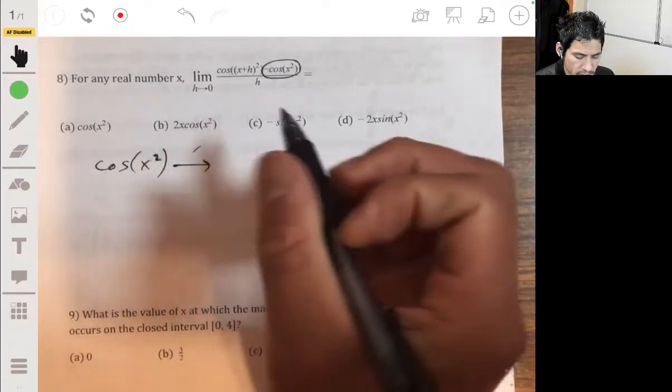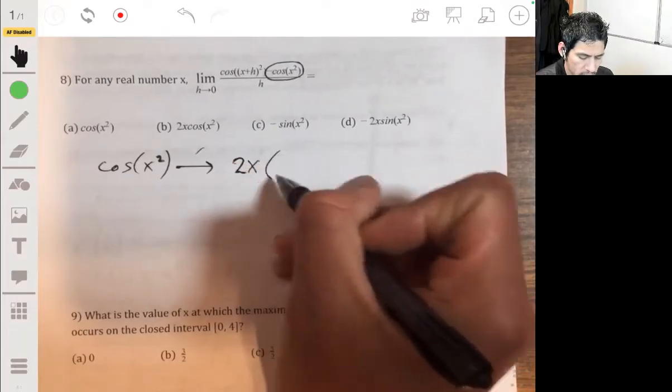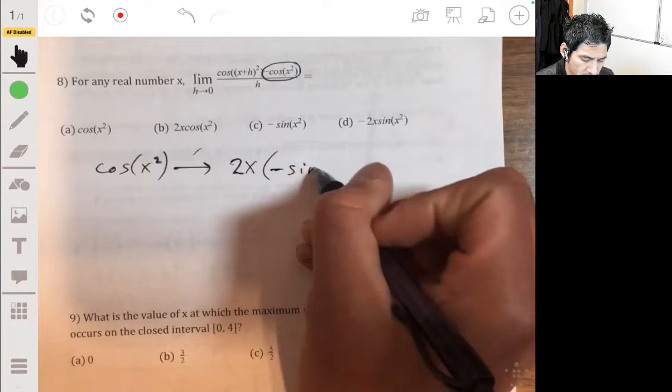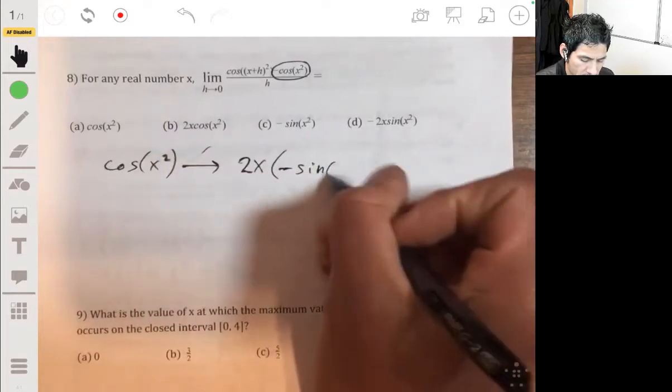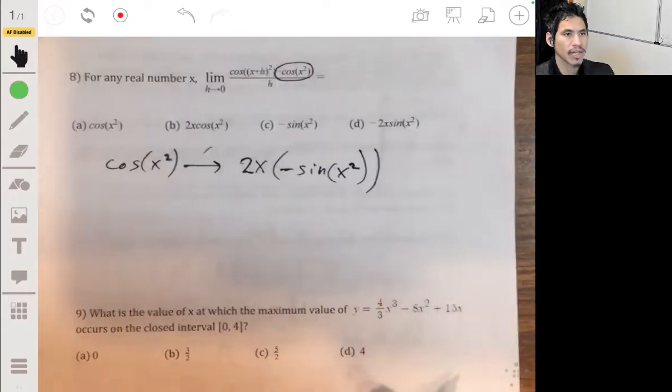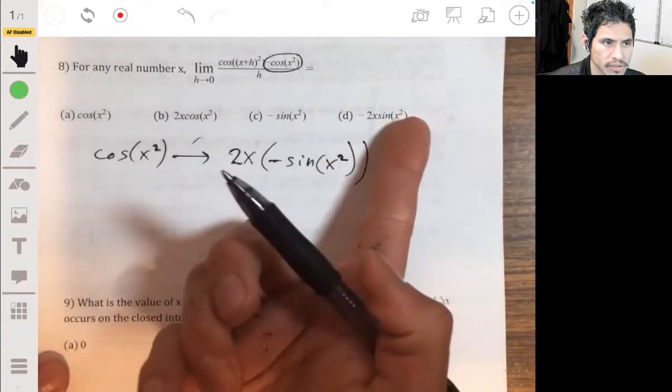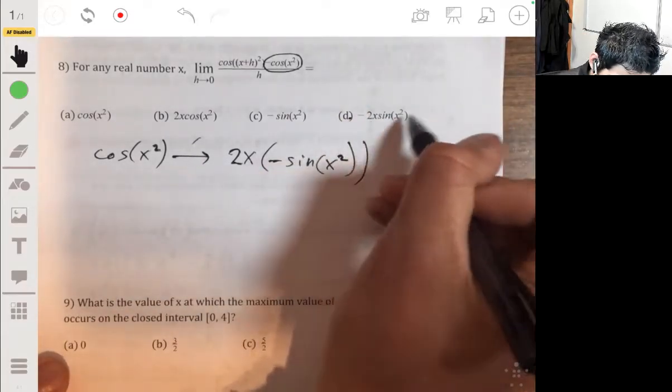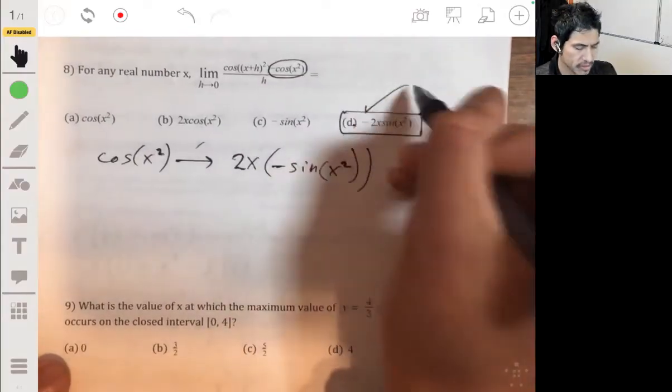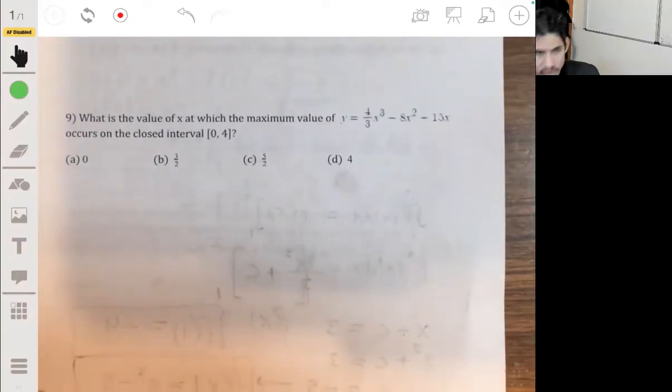So we differentiate this using the chain rule. Take the derivative of x squared, which is 2x, times the derivative of the cosine function, which is negative sine, keeps the inside the same. And that's all. We don't even need to simplify this, it's quick to identify, so the answer is D.